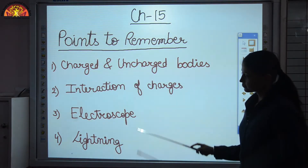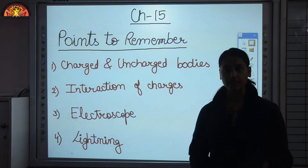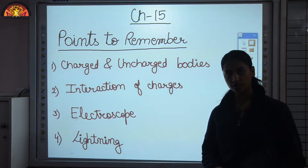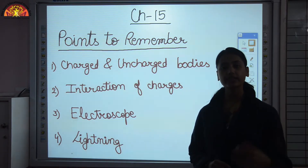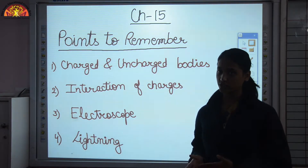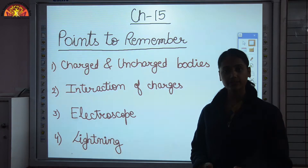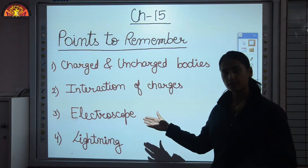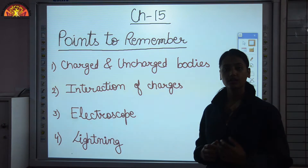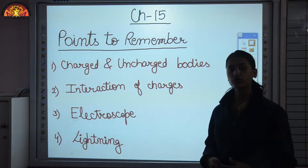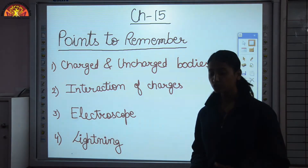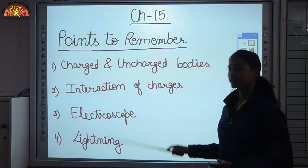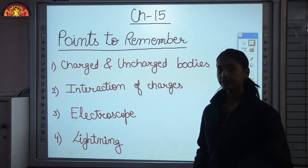Then electroscope — this is a device used to detect the type of charge. Suppose I give you any body and ask you to identify whether it is charged or uncharged. You can identify it by using an electroscope. In this chapter we discussed the gold leaf electroscope, in which we make use of two thin strips of gold. It is an instrument used to detect the charge.